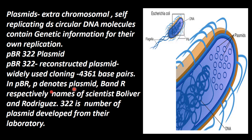So, respectively, B stands for Bolivar and R stands for Rodriguez — names of the scientists. 322 is the number of the plasmid developed from their laboratory.